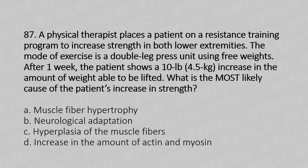Option A: Muscle fiber atrophy. Option B: Neurological adaptation. Option C: Hyperplasia of the muscle fibers. Option D: Increase in the amount of actin and myosin.